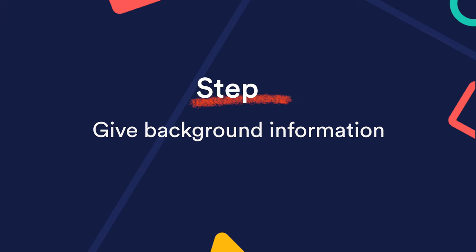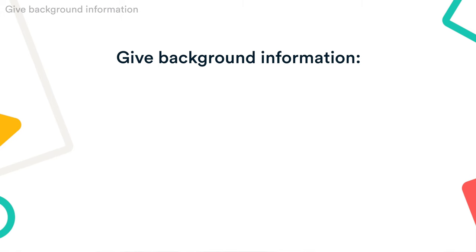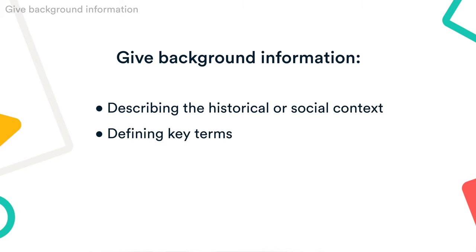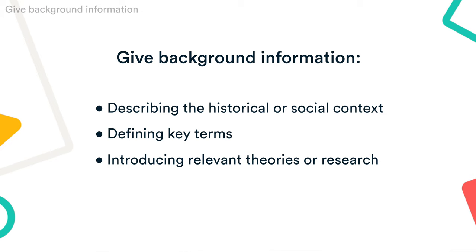Step 2: Give background information. Next, give your reader the background they need to understand your argument. Depending on the subject of your essay, this might include describing the historical or social context, defining key terms, introducing relevant theories or research, or setting up the different sides of a debate. But don't overdo it here — save your evidence and interpretation for the main body of the essay.